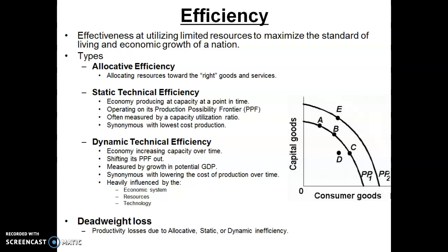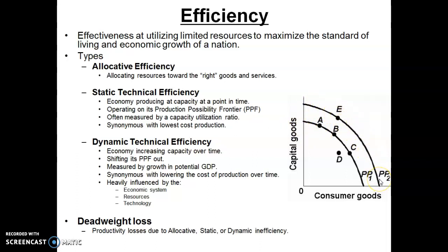This implies that we're growing our potential GDP, and it's synonymous with lowering the cost of production over time. Static efficiency is producing on our curve and getting the lowest cost of production at a given point in time. Dynamic efficiency is shifting our potential out and decreasing our cost of production over time.